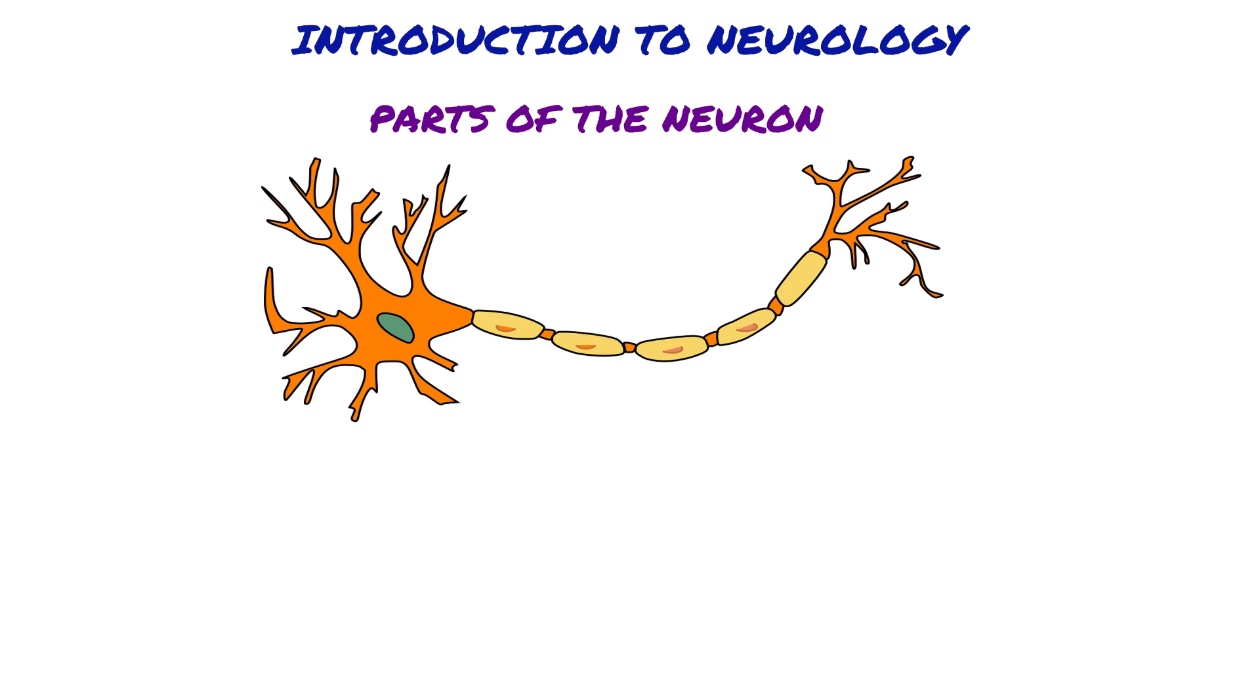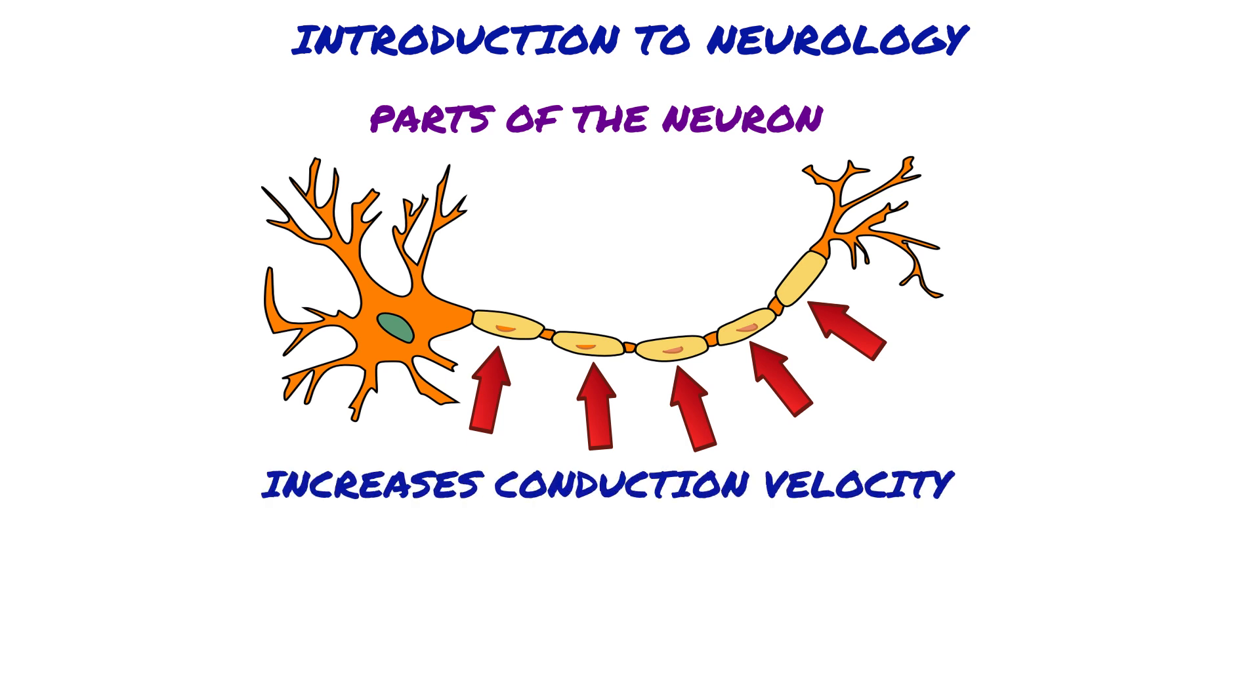Some of the axons of the neurons have myelin, which is an insulating layer of modified plasma membrane that wraps around axons of nerve in a spiral structure. Myelin increases the space constant and the conduction velocity of signals traveling down axons.